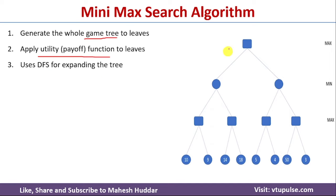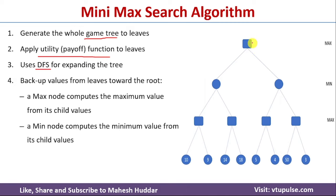Once the tree is ready, we want to find the value of the root node and the optimal path. For that, we apply DFS to expand the tree starting from the root node. Once we reach a leaf node, we back up that value towards the root. There are two things to remember when backing up: we need to check what kind of node the parent is — whether it's a Max node or a Min node.